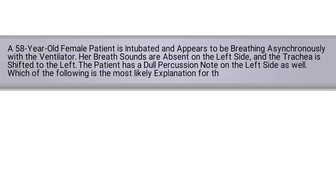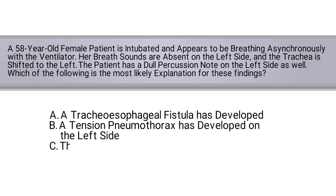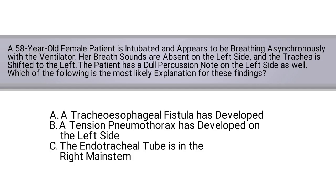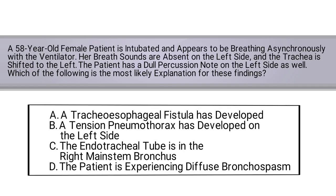Which of the following is the most likely explanation of these findings? A: a tracheal-esophageal fistula has developed. B: tension pneumothorax has developed on the left side. C: the endotracheal tube is in the right main stem bronchus. Or D: the patient is experiencing diffuse bronchospasm.